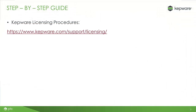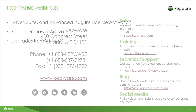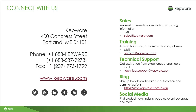You have successfully activated your KepServer EX license. You can refer to these same step-by-step instructions online at Kepware.com/support/licensing. For other licensing situations such as support renewals and upgrades from version 5 to version 6, please refer to the associated video. If you need additional help, contact your software vendor or Kepware technical support at 1-888-Kepware, extension 211.